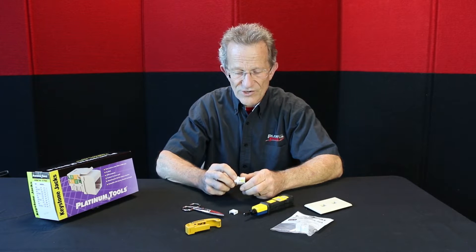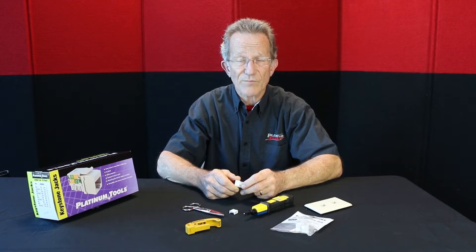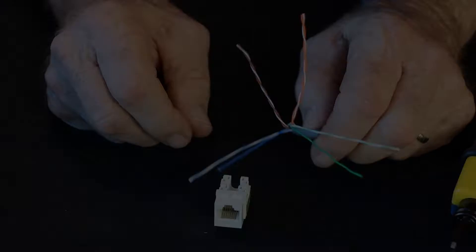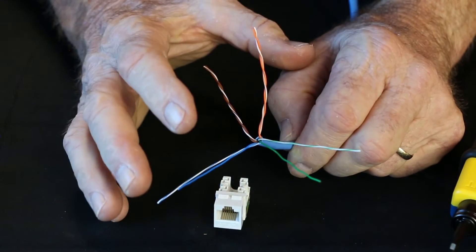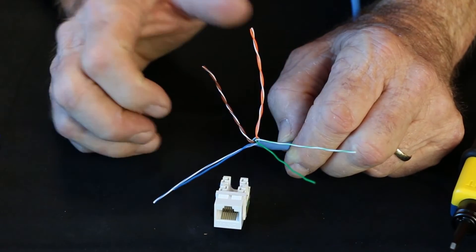So today what I want to show you real quickly is just a technique of wiring them and punching them down, our Keystone Jacks 110-type punchdown. Okay, I've prepped my cable and I've separated my 3-6 pair and my 5-4 pair.